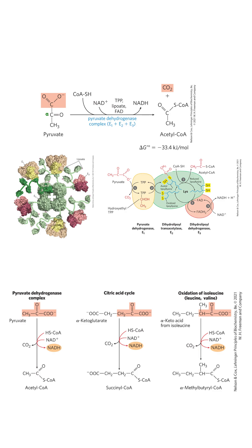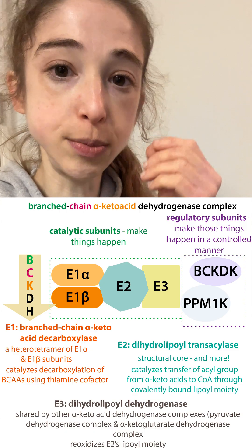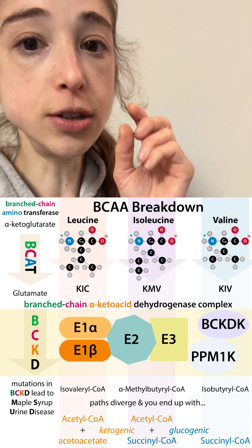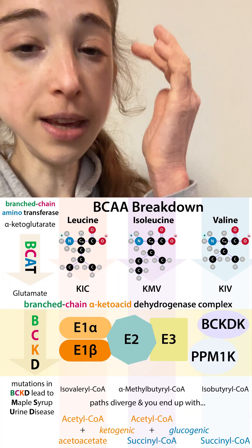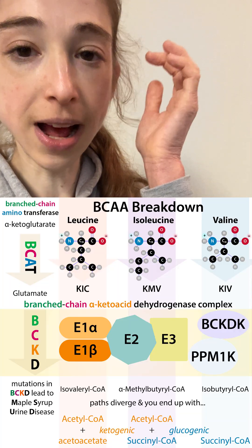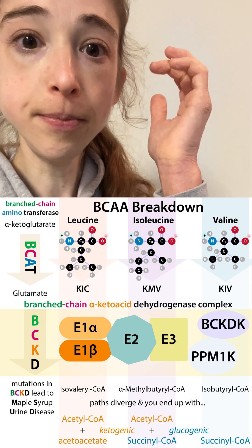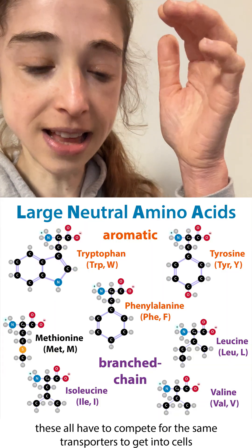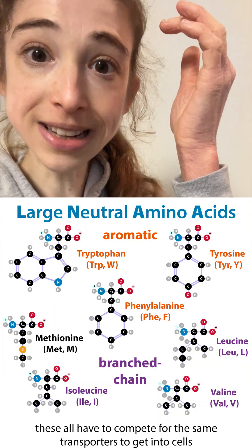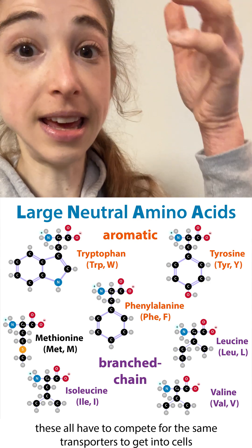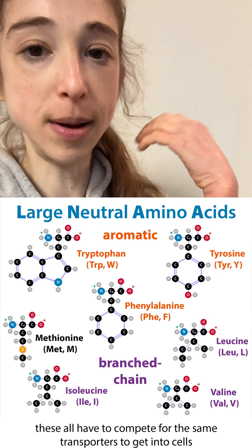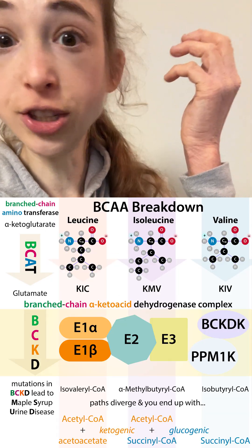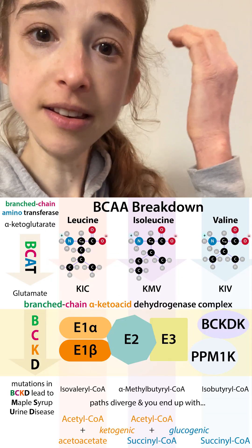If you have mutations, then it prevents the breakdown of these branched chain amino acids, so they build up. It's going to compete for the large neutral amino acid transporters in your brain — the LNAAs. Those amino acids that need to get into your brain can't get in because they're being hogged by things like leucine.